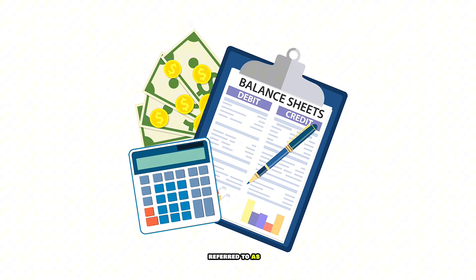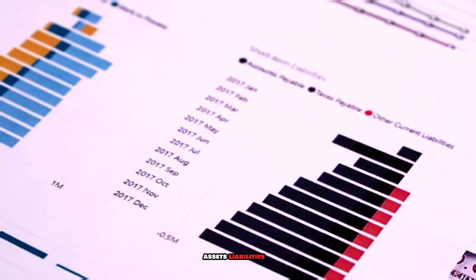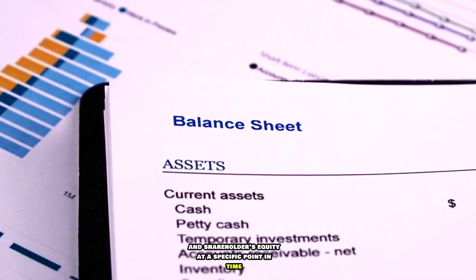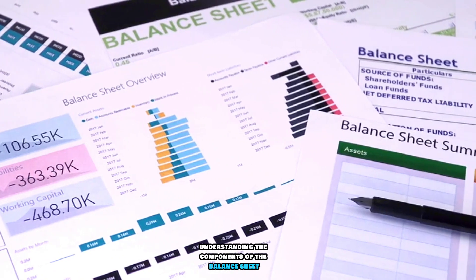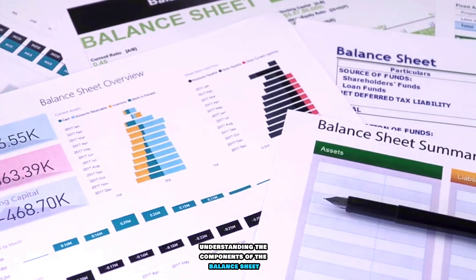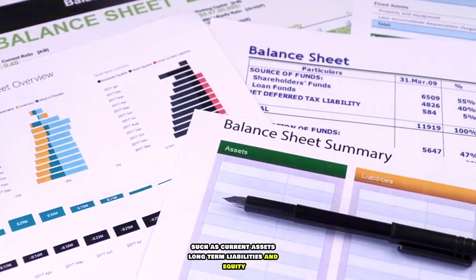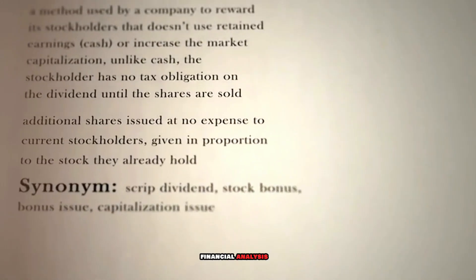1. The Balance Sheet: Often referred to as the snapshot of a company's financial position, the balance sheet provides a detailed overview of its assets, liabilities, and shareholders' equity at a specific point in time. Understanding the components of the balance sheet, such as current assets, long-term liabilities, and equity, lays the foundation for comprehensive financial analysis.